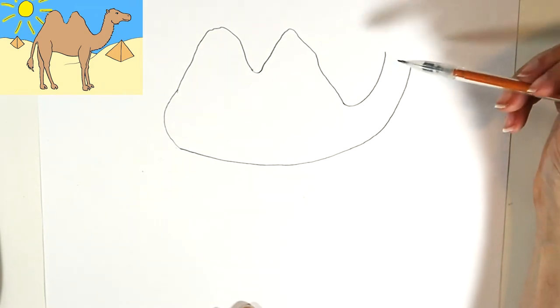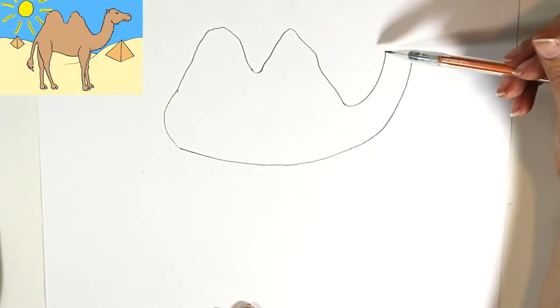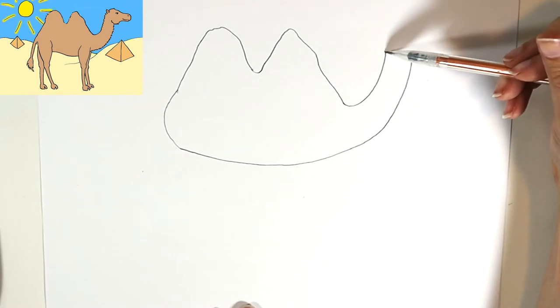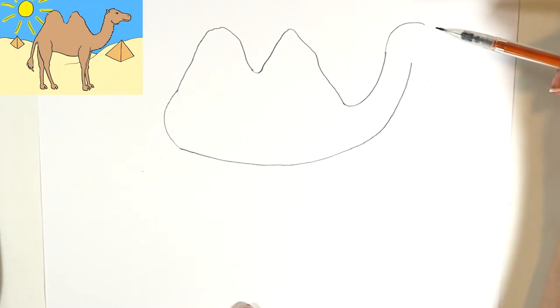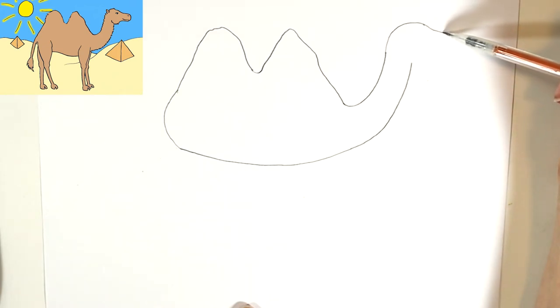Now, the head for our camel is a little bit of a funny shape. It's kind of like a horse or a llama, so their face is long. Let's start with the back of the head and we're gonna make a little curve and it goes up and over, then kind of go down and then straight for a little while and then stop.